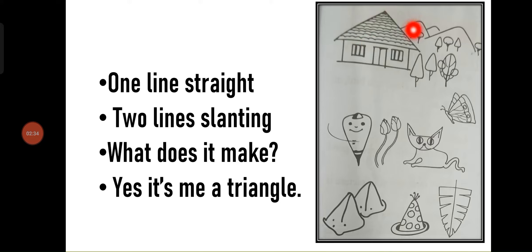Two line slanting. What does it make? Yes, it's me, a triangle.